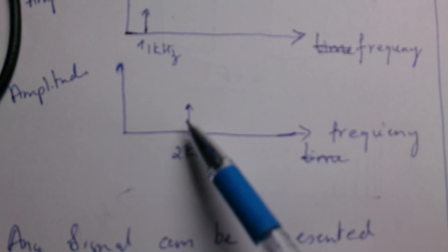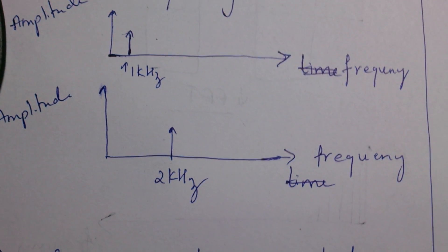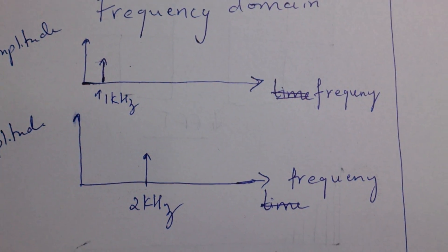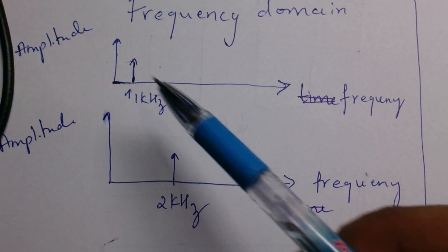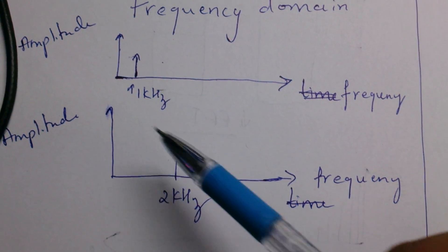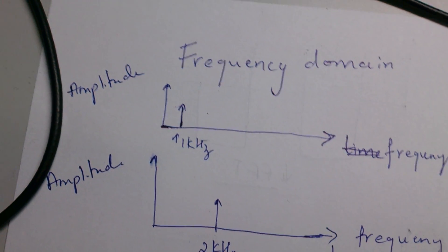If I have a two kilohertz signal in time domain, in frequency domain you will see a peak at two kilohertz. Now you may wonder why we need to go for frequency domain. What is the use of having these signals being plotted as amplitude versus frequency?